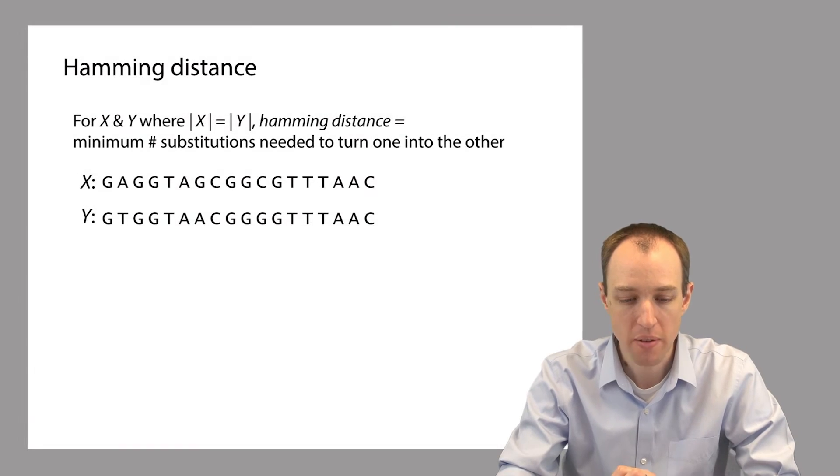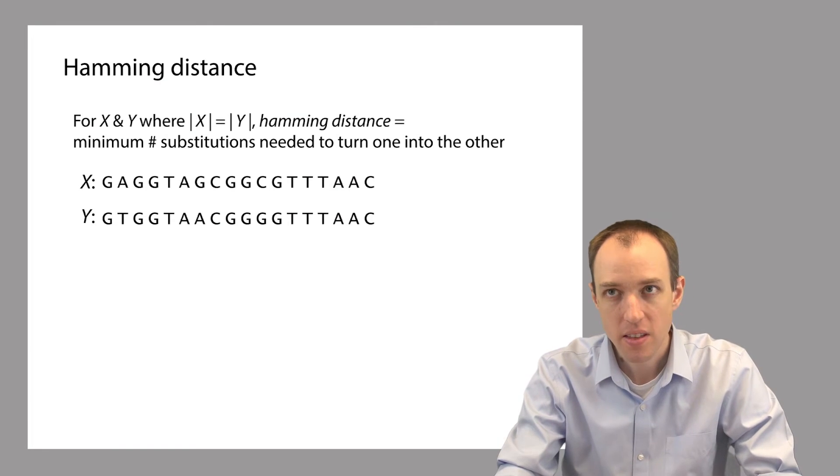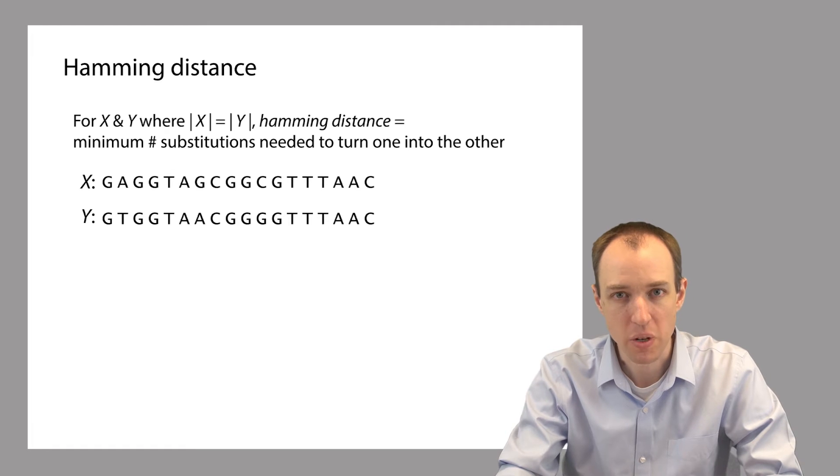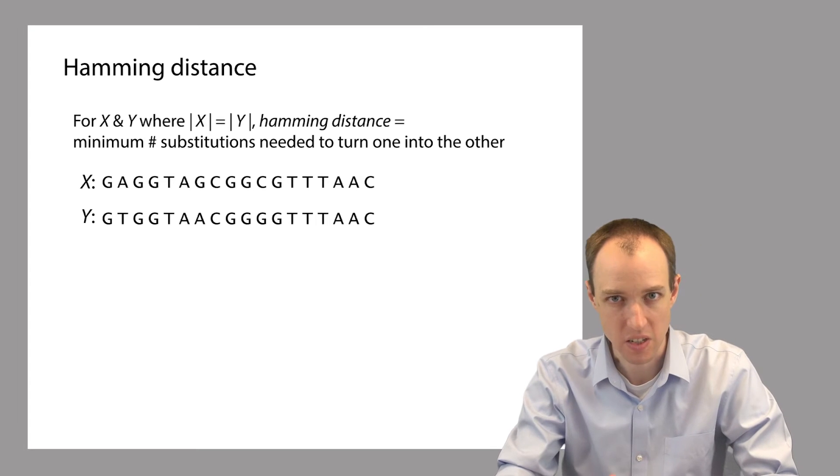We want to be able to talk about the distance between two strings. In other words, we want to be able to describe how different they are, how many differences there are. But we have to define exactly what we mean by distance. So the first kind of distance we'll define is called Hamming distance. So if you have two strings x and y that are of the same length, we can define the Hamming distance between x and y as the minimal number of substitutions we need to make to turn one of the strings into the other.